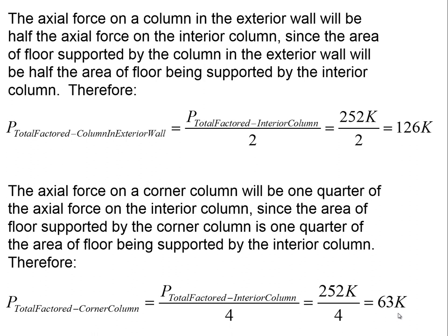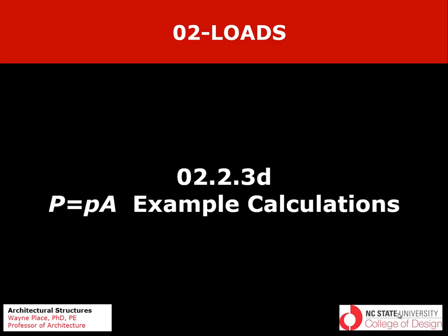One important note: even though corner columns carry much lower gravity axial forces than interior columns, bracing elements in the perimeter wall can induce fairly substantial forces in corner columns under wind load. Corner columns tend to take the brunt of wind bracing effects in the perimeter walls. We've only addressed the gravity load portion — at some point we also need to examine axial forces induced by bracing elements resisting wind loads. That concludes our discussion of the formula P equals p times A with example calculations.